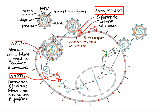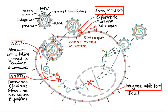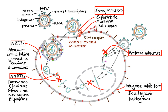Moving on to integrase inhibitors, this class of drugs prevents HIV from integrating its genetic material into the host cell DNA by specifically blocking the action of the viral integrase enzyme. Drugs in this class include dolutegravir and raltegravir. Finally, the last class of HIV drugs is protease inhibitors. Drugs in this class work by blocking the action of HIV protease enzyme, thus preventing cleavage of viral polyproteins into active proteins needed for assembly of new viral particles. Drugs in this group include atazanavir, darunavir, fosamprenavir, ritonavir, saquinavir, and tipranavir.